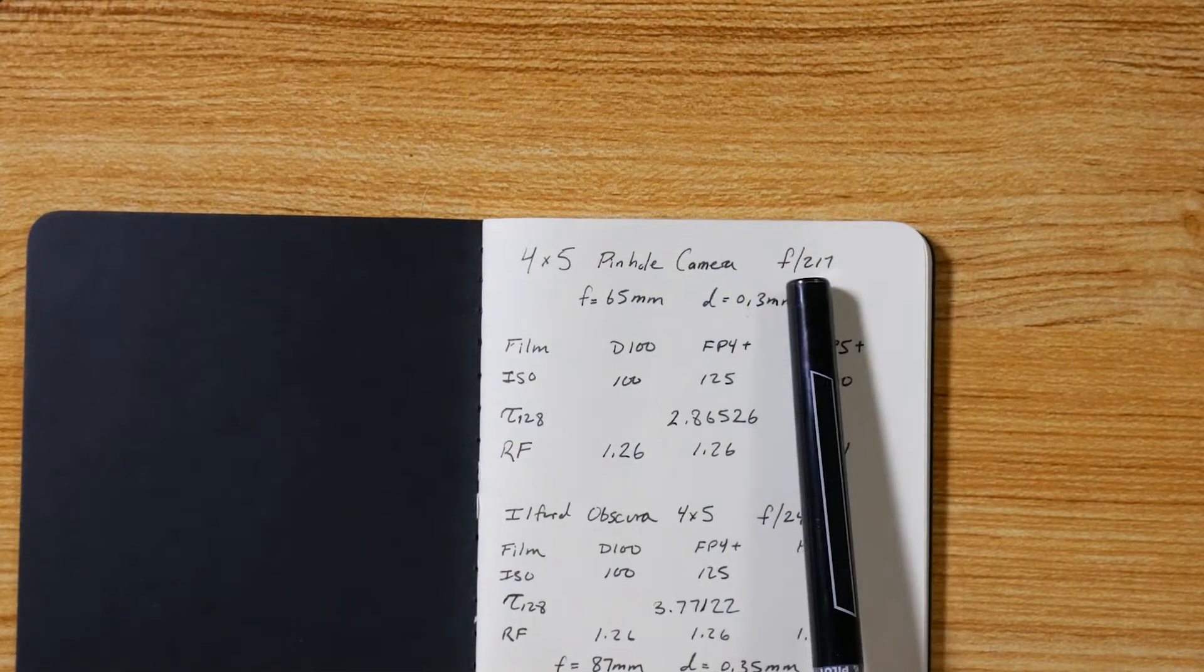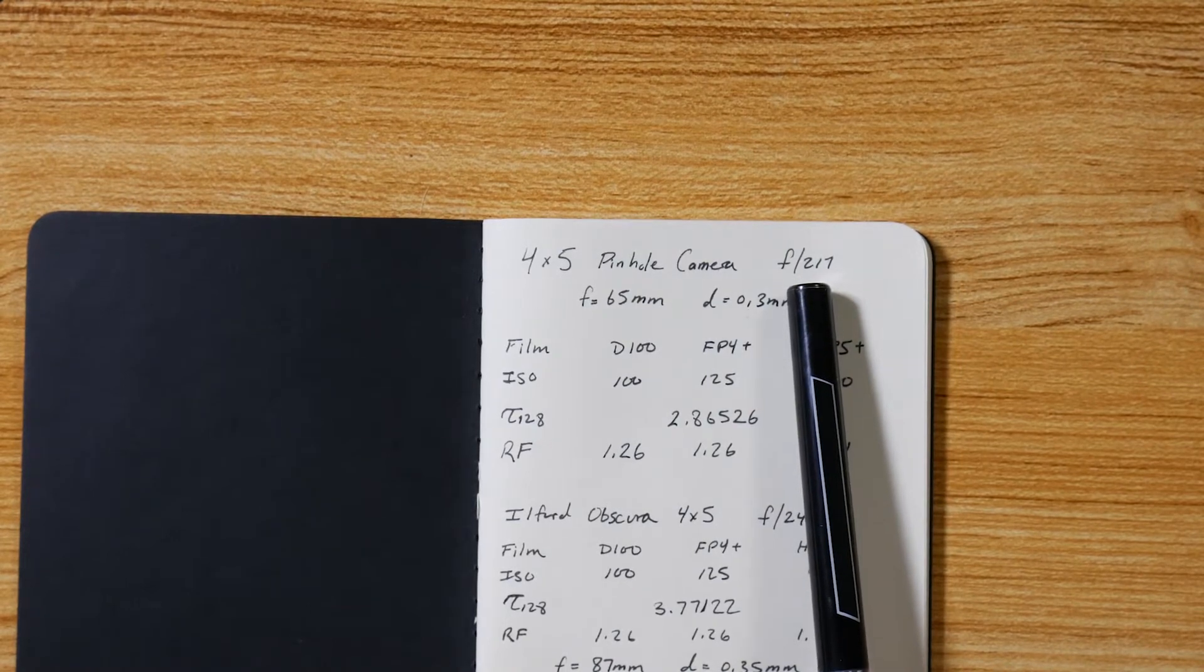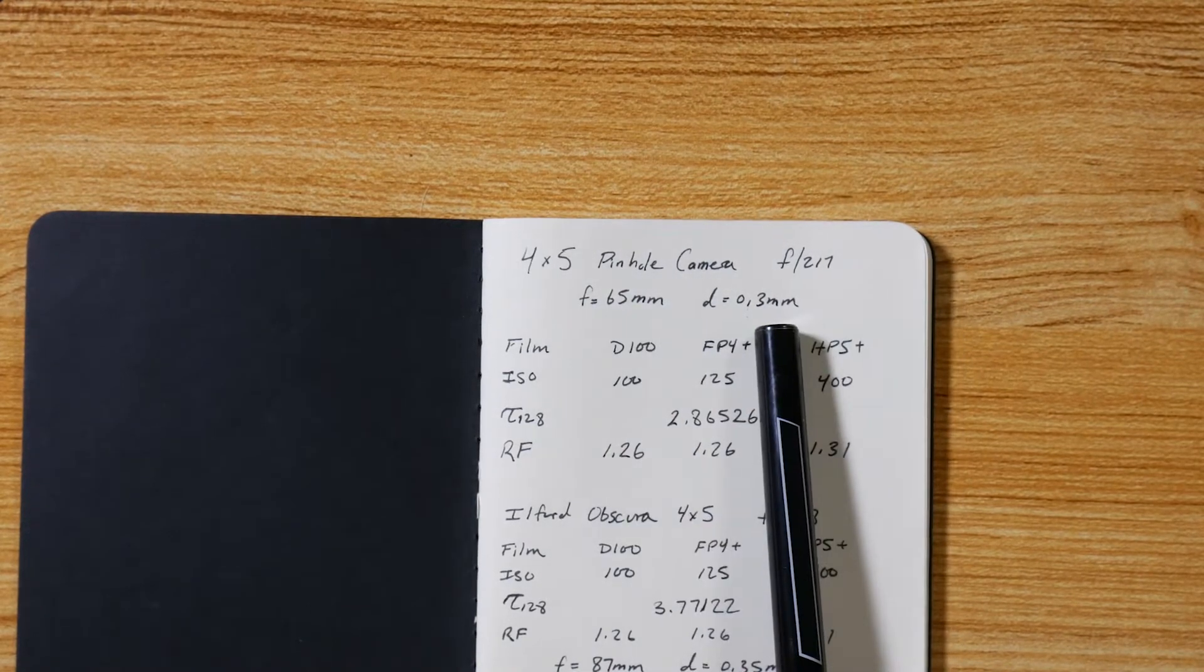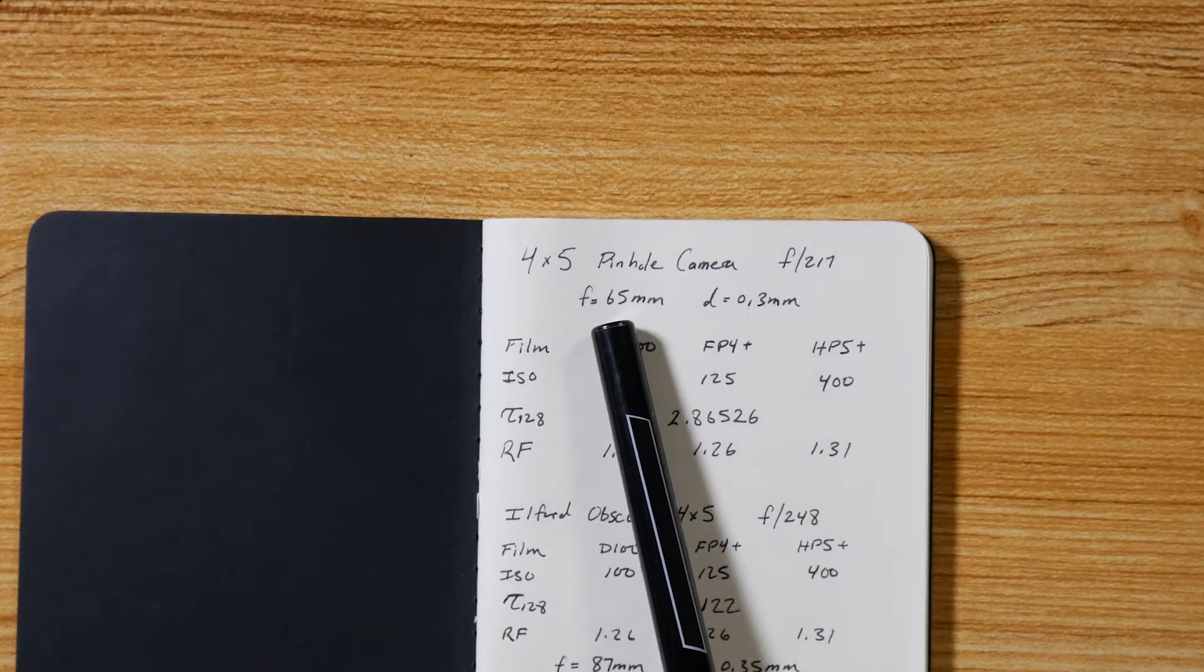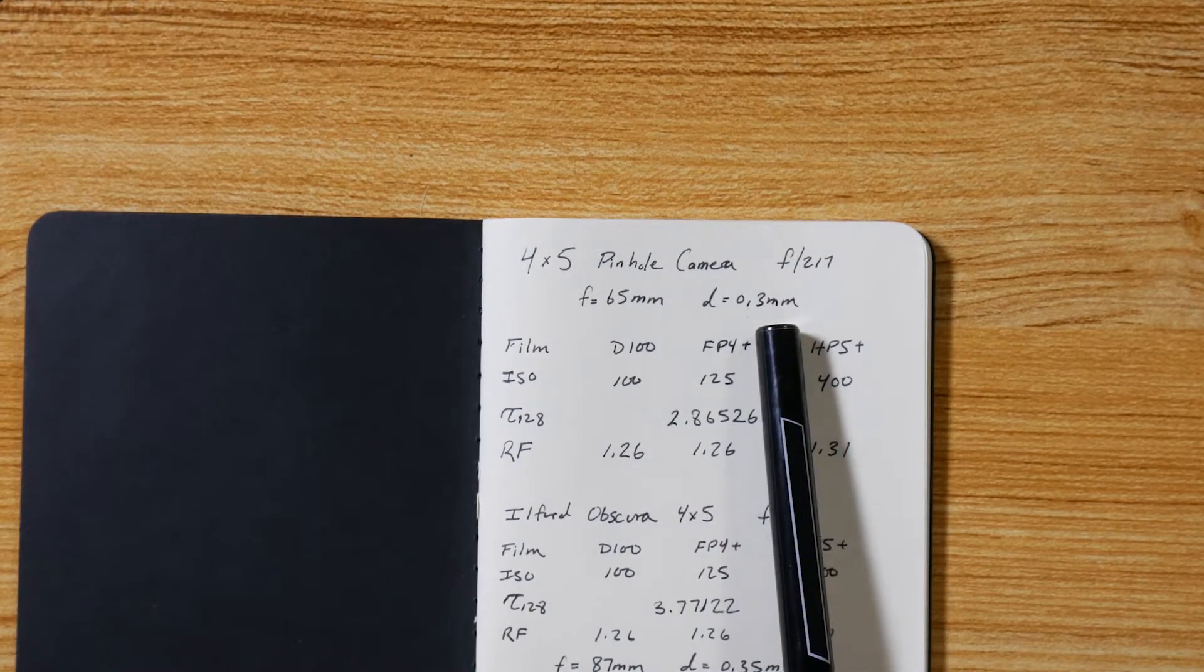First we have to know the f-stop of the camera. Remember the f-stop of the camera is just the focal length divided by the diameter of the pinhole. So 65 millimeters divided by 0.3 millimeters gives me 217.